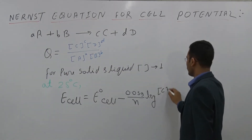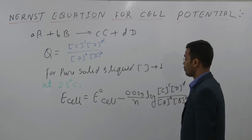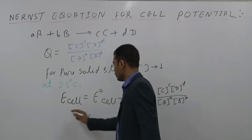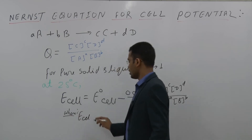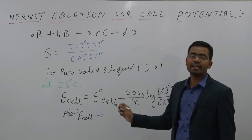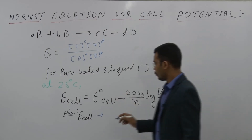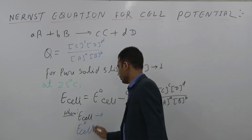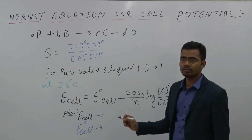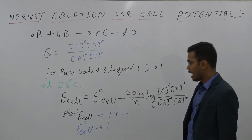Q is the concentration of C raised to c, times D raised to d, divided by A raised to a, times B raised to b. E_cell is the cell potential at any given condition. E°_cell is the cell potential at standard state. n is the number of electrons exchanged.